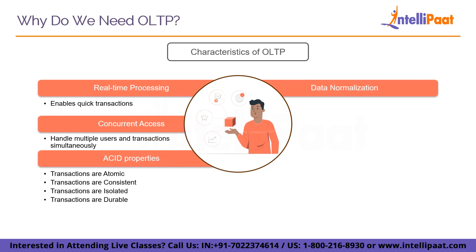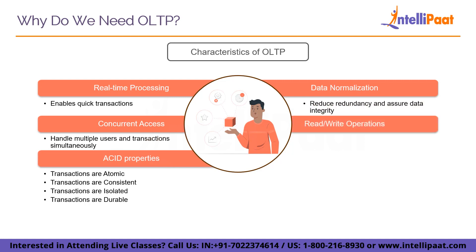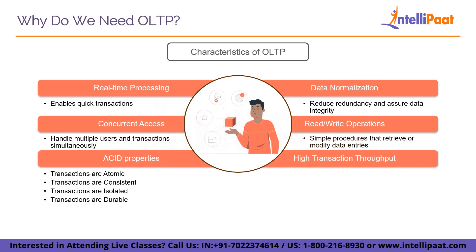Typically, OLTP databases are normalized, which means data is arranged into tables to reduce redundancy and assure data integrity. This normalization may include dividing data into smaller tables and employing relationships like foreign keys to connect similar data. The majority of OLTP systems include read and write operations on individual records or small groups of records, such as customer orders, inventory levels, or account balances. OLTP systems are built to process a large number of transactions per second — critical for banking, retail, and airline reservation systems.